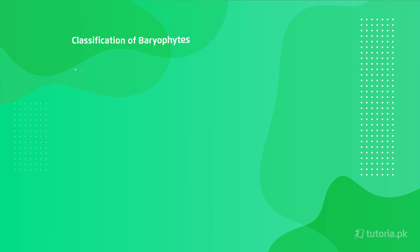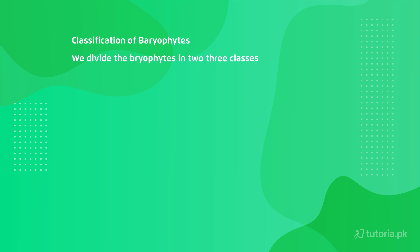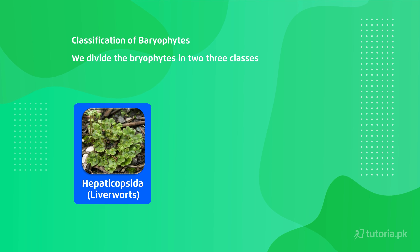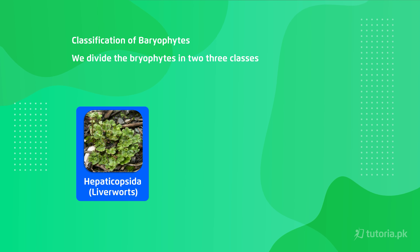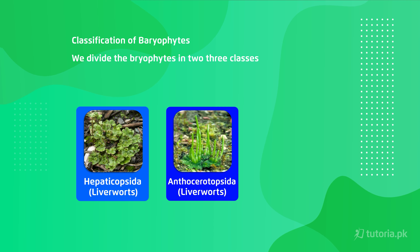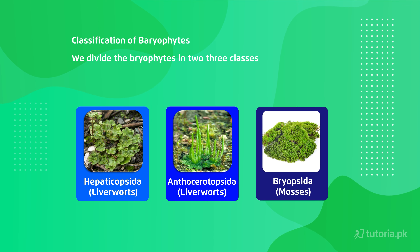We divide the bryophytes into three categories: Hepaticopsida, Anthocerotopsida, and Bryopsida.